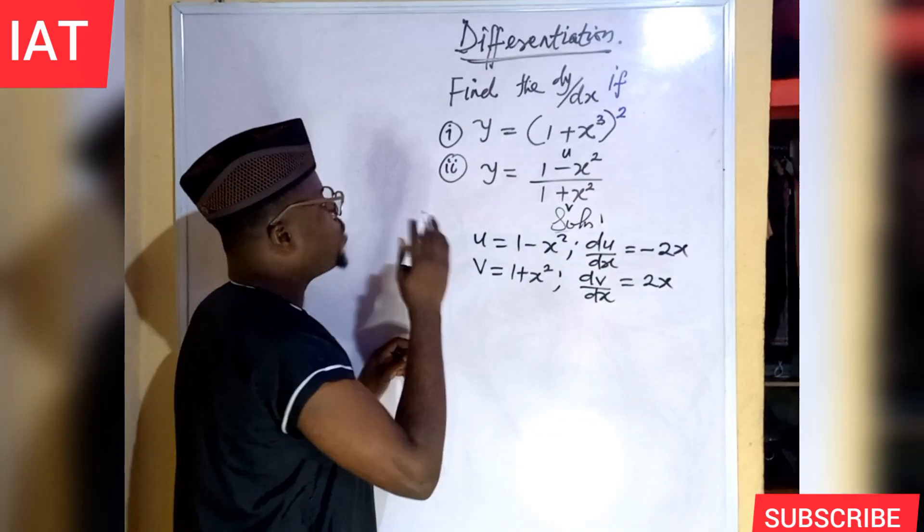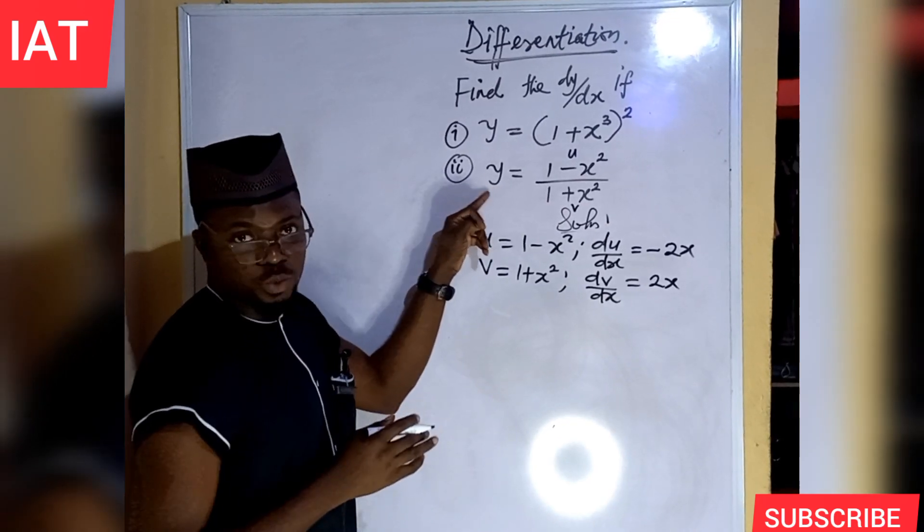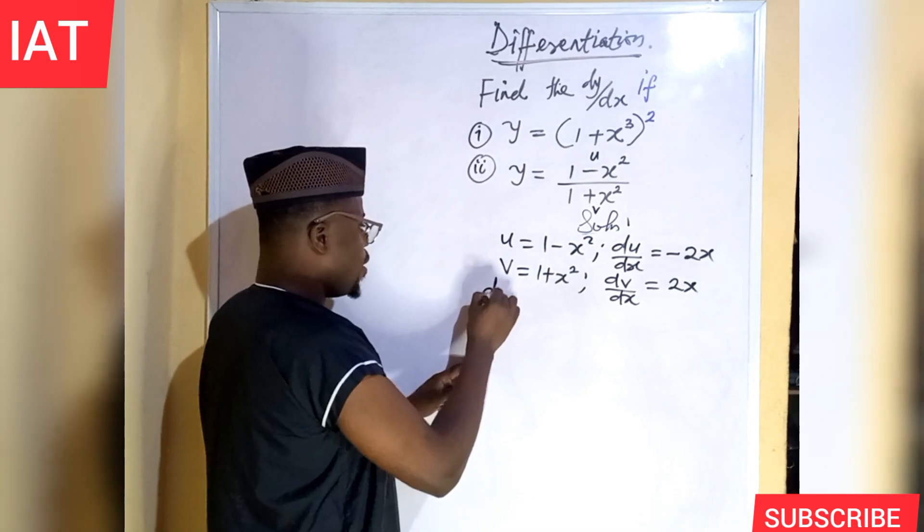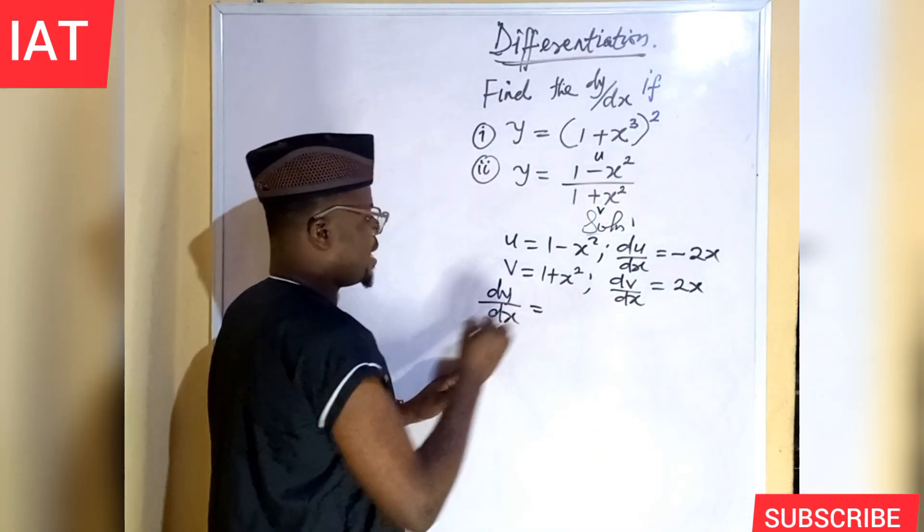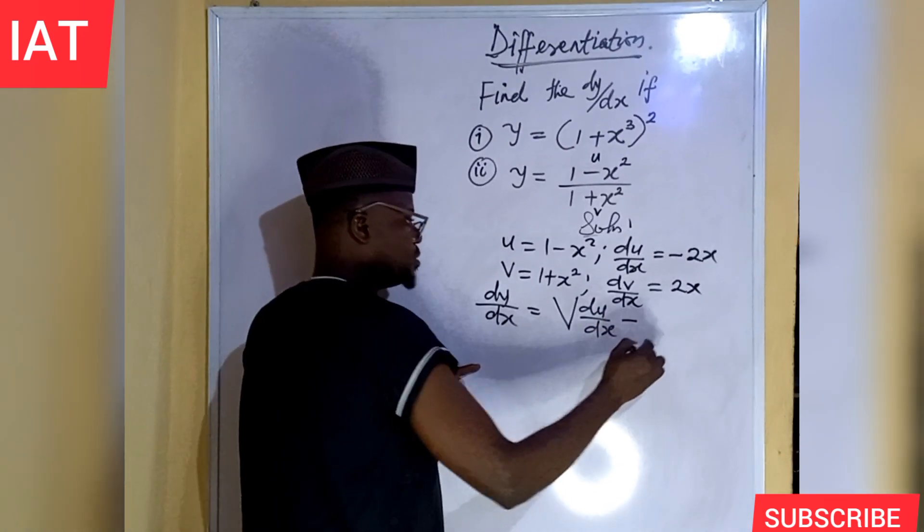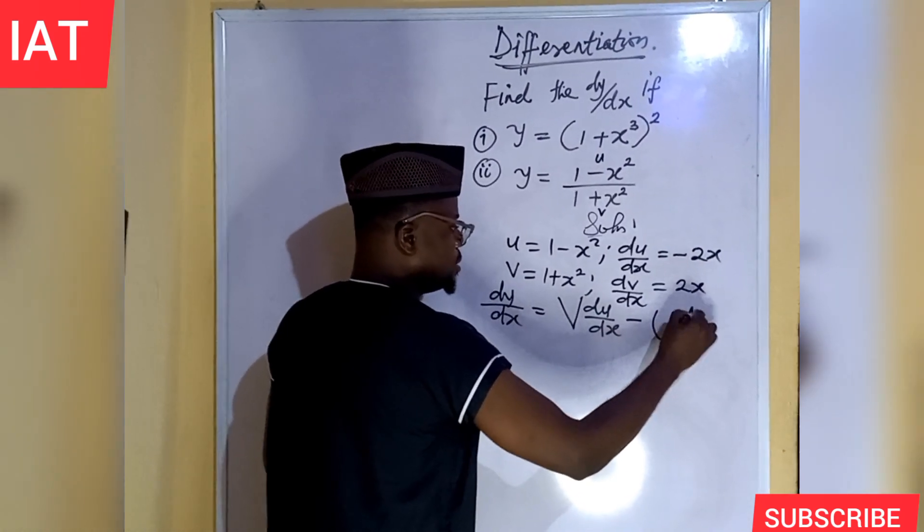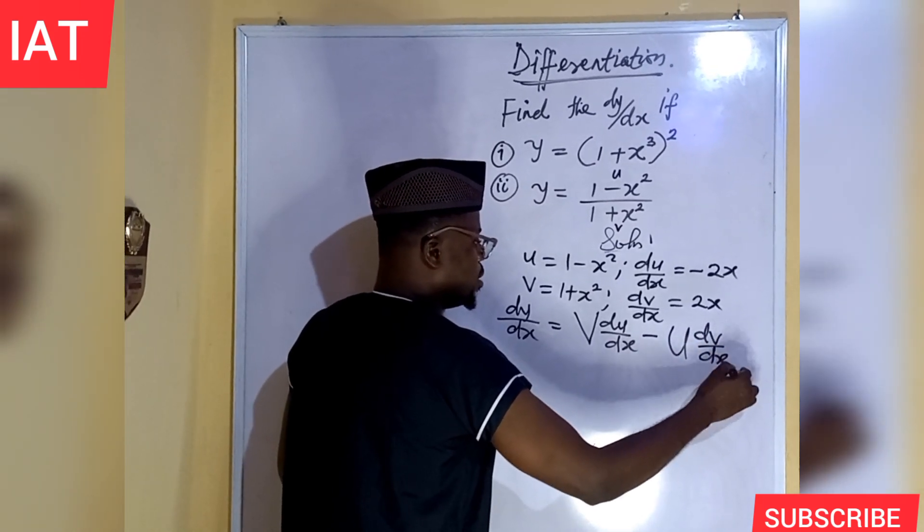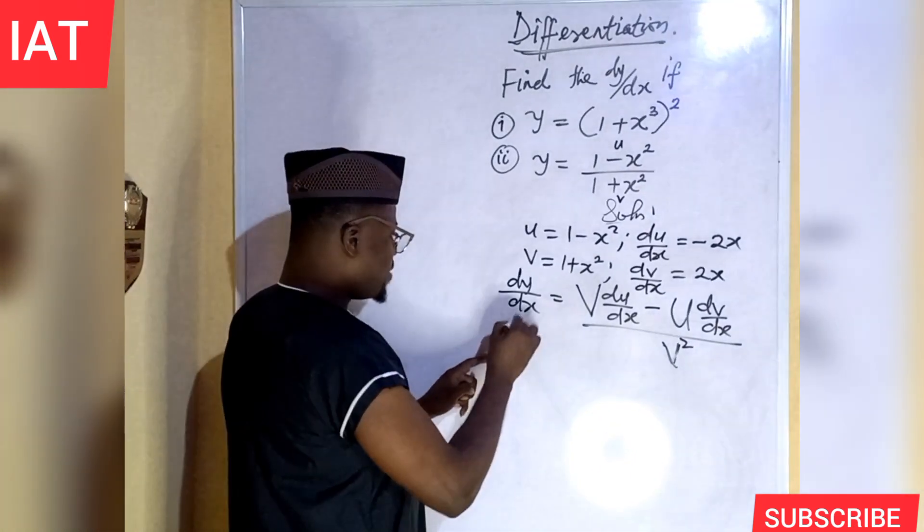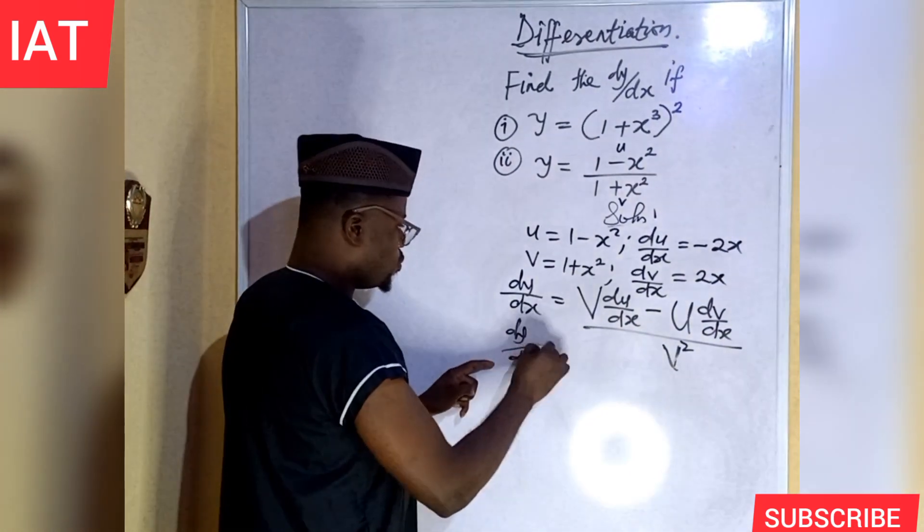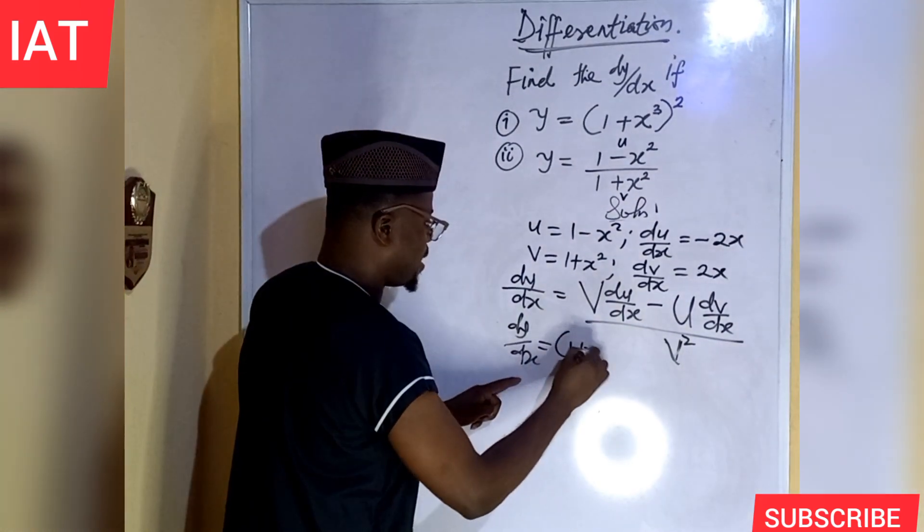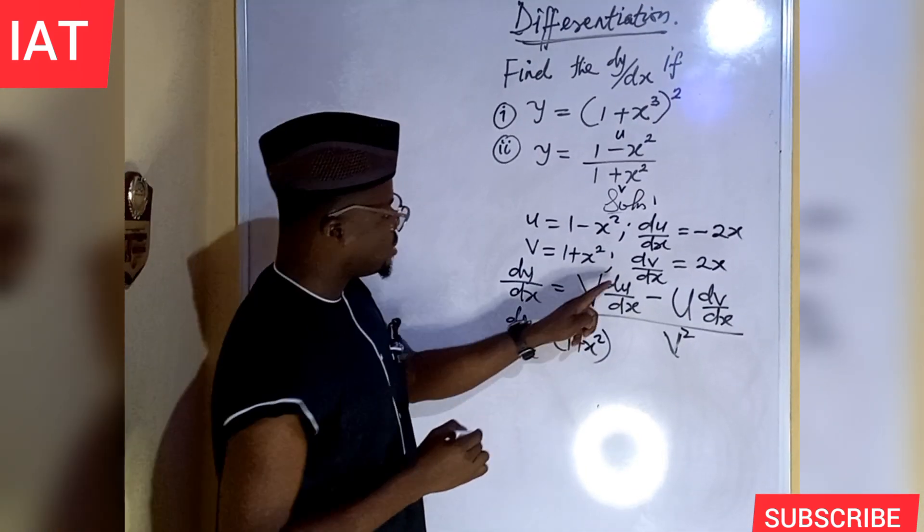So, now we are looking for dy over dx. Checking for the derivative of this y with respect to x. So, what we need to do is to quote the formula of quotient rule. dy over dx is equal to v du over dx minus u dv over dx all over v squared.